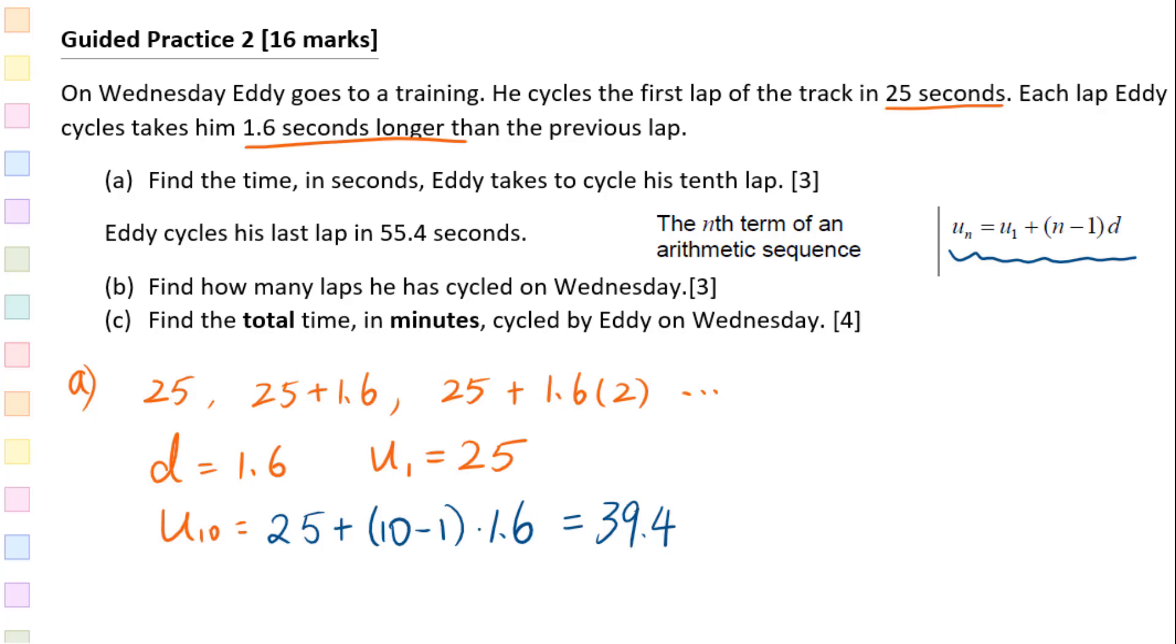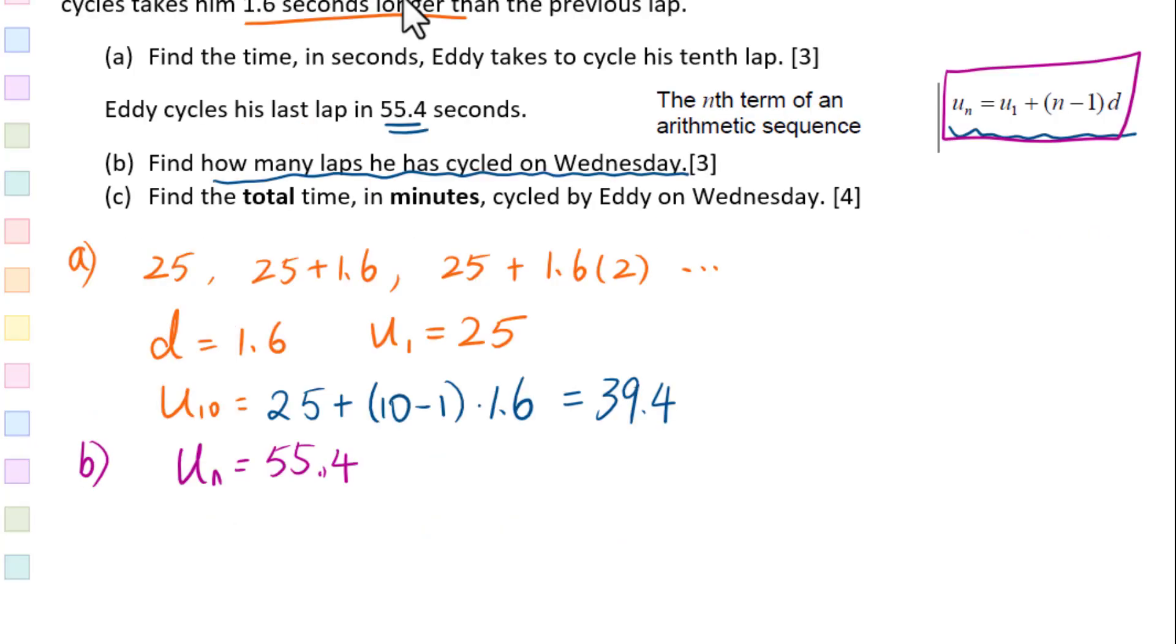Eddie cycles his last lap in 55.4 seconds. Find how many laps he has cycled on Wednesday. In this question, we are given U sub n equals 55.4 seconds, looking for this n. We will still use this formula. D is 1.6, U sub 1 equals 25. So we get 55.4 equals 25 plus n minus 1 times 1.6.